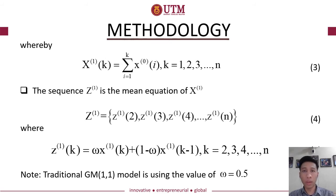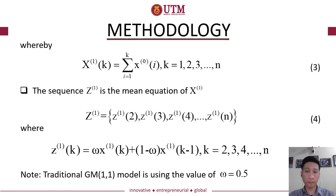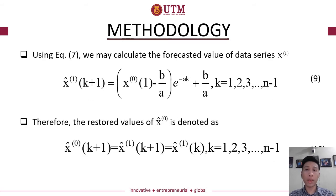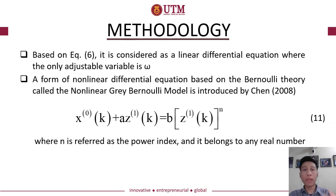Following through Equations 3 to 5, Equation 5 shows the form of the traditional GM(1,1) model using the value of epsilon equal to 0.5. The main objective of this research is to find the most optimum value for epsilon, which will be discussed in the GRG non-linear section. The forecasted values are calculated using Equations 6, 7, 9, and 10. Based on Equation 6, it is a linear differential equation where the only adjustable variable is epsilon.